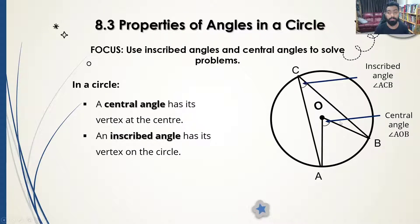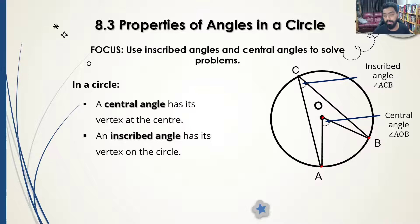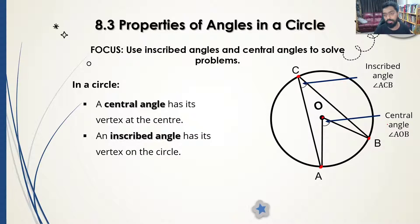Our central angle is angle AOB — it starts at A, goes to the center O, and comes back to B. The inscribed angle also starts at A, touches a point on the circumference of the circle, and comes back to B. This is what we call the central angle and the inscribed angle.